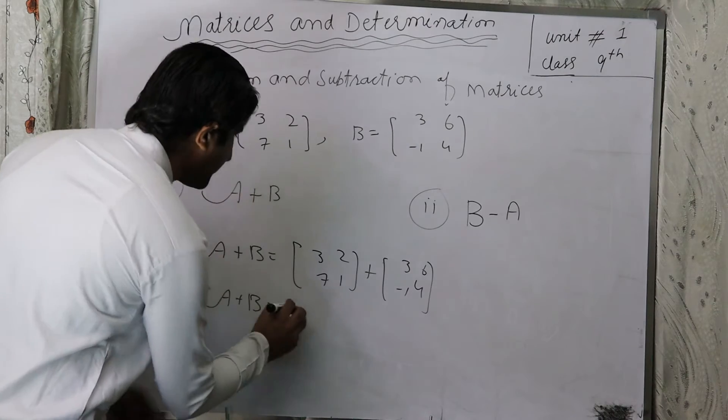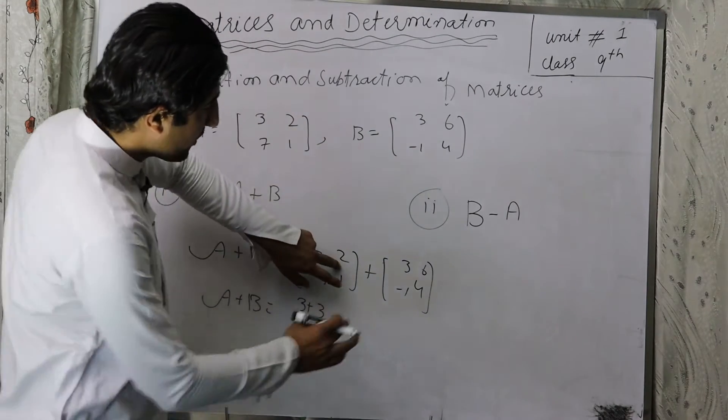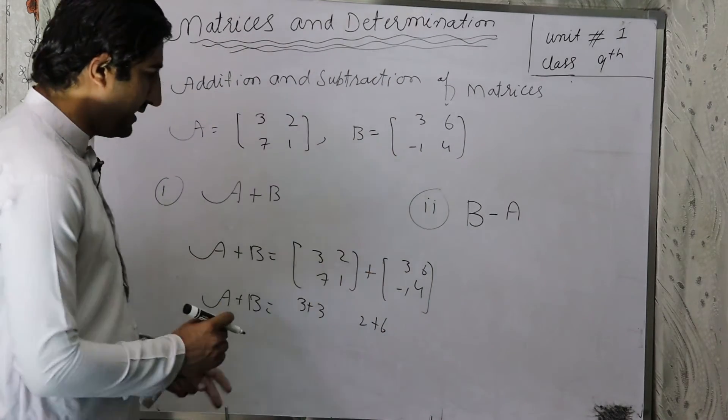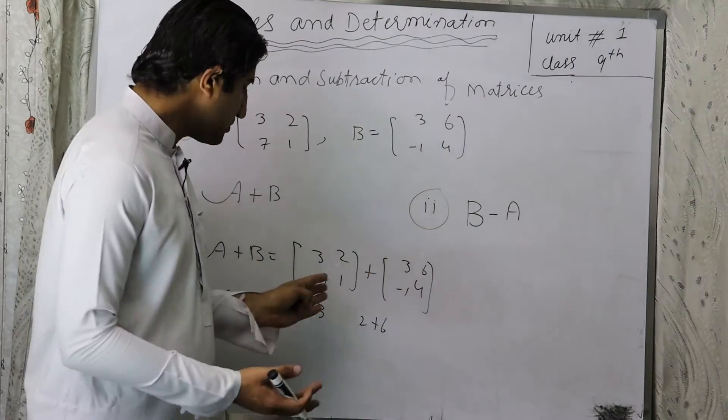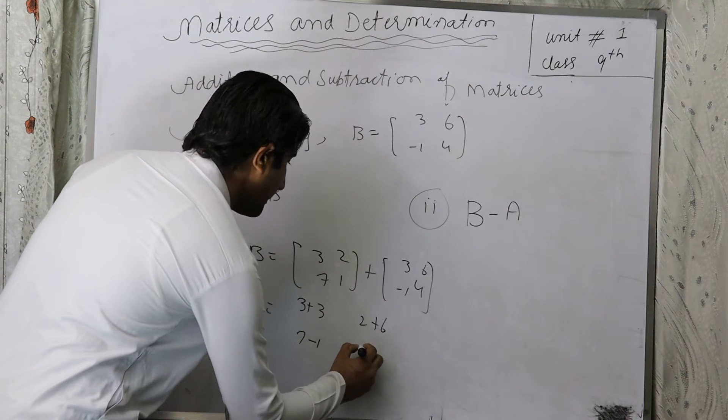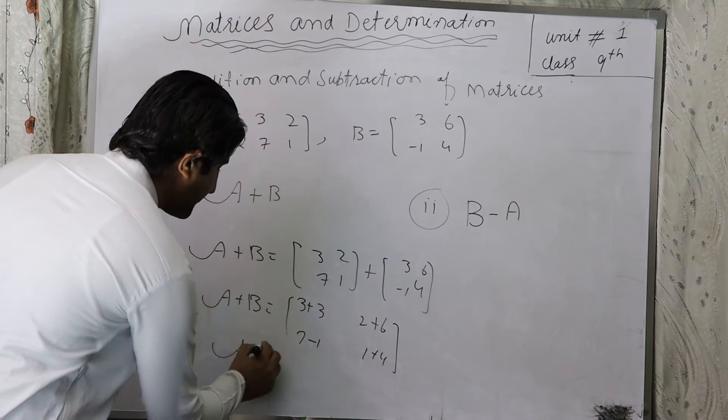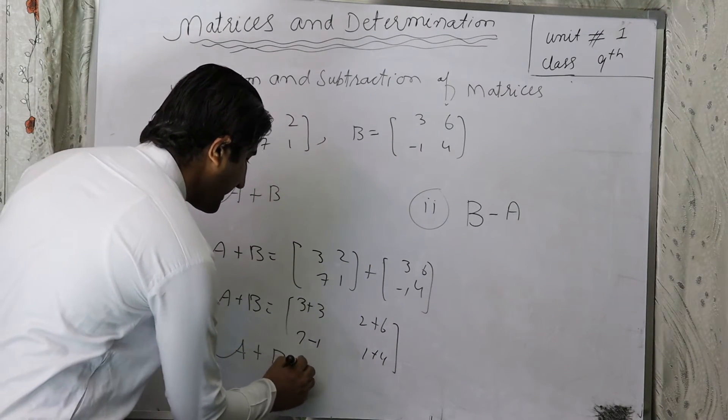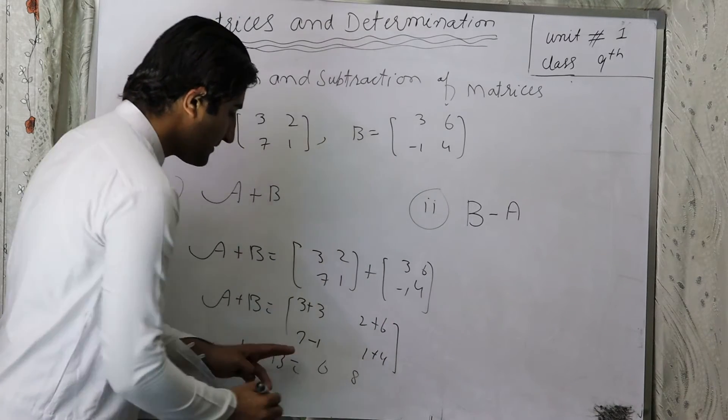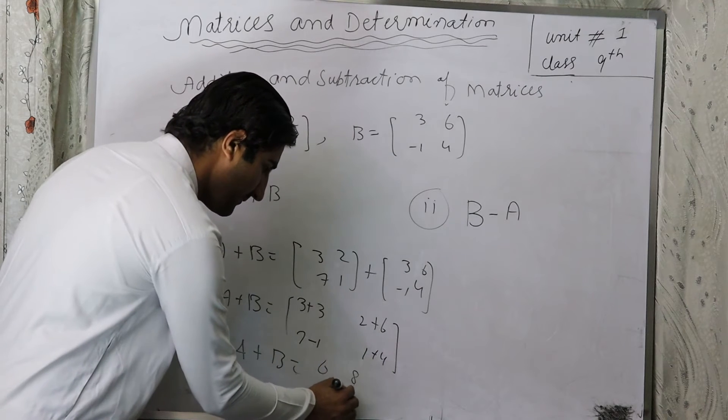A plus B is equal to 3 plus 3 and 2 plus 6. This is 7 and minus 1, and we have 1 plus 4. So guys, we have A plus B: 3 plus 3 we have 6, 2 plus 6 is 8, 7 minus 1 is 6, and 1 plus 4 we have 5.